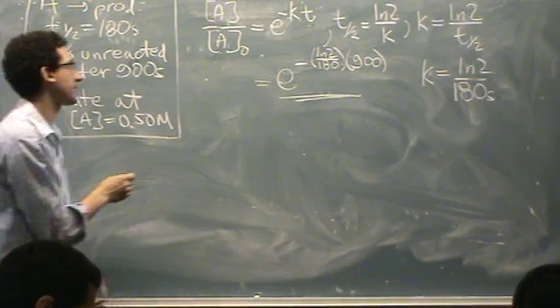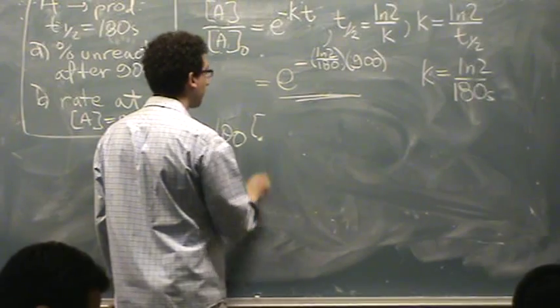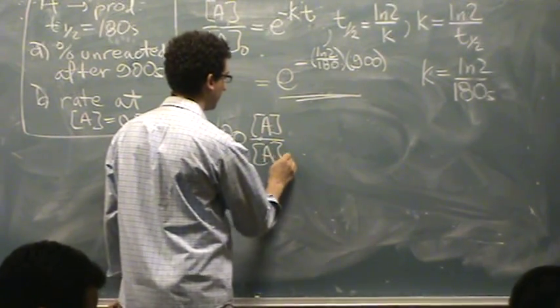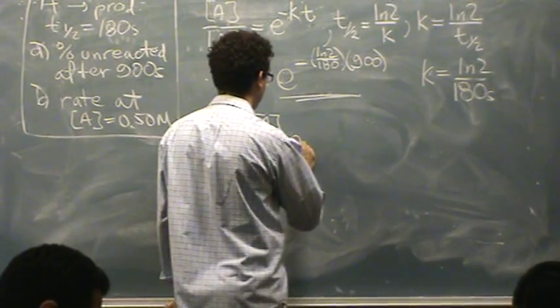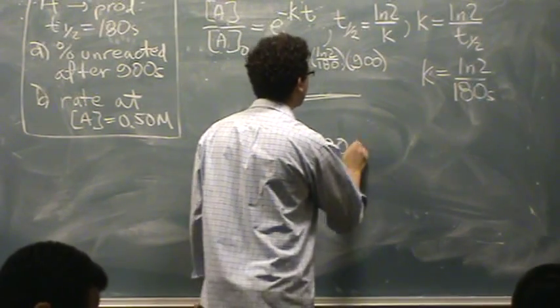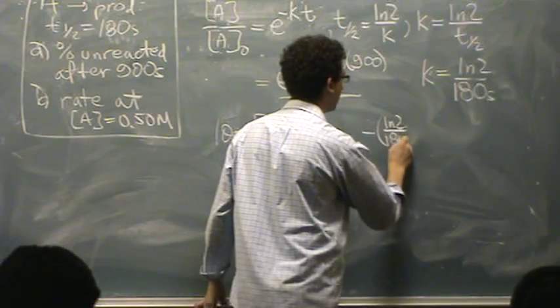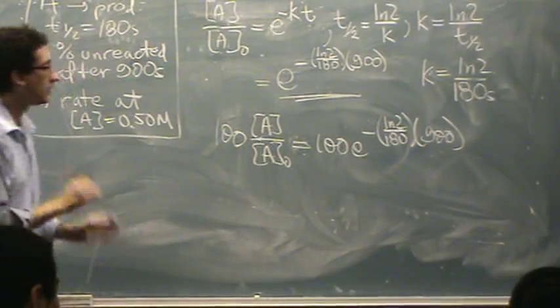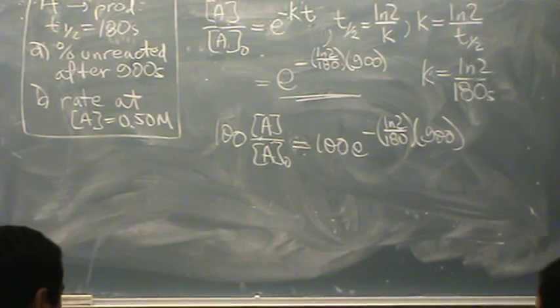Because they want percent unreacted. So my answer will, that's the fraction answer. This will be the percent answer. Multiply by 100. So that equals 100 e to the minus natural log of 2 over 180 times 900. Whatever that number is, that will be a percent number here. Okay, that's A.